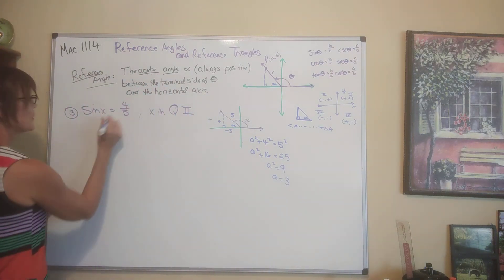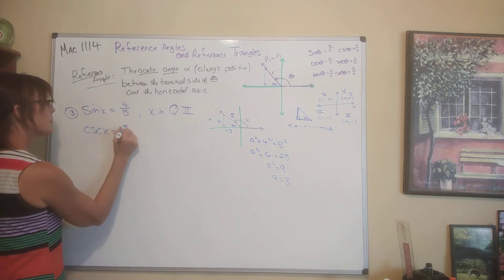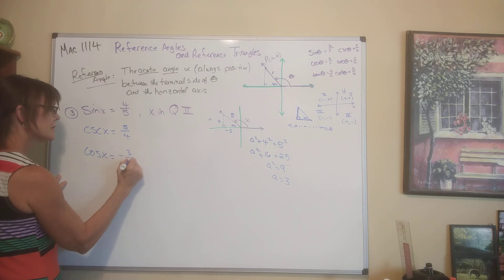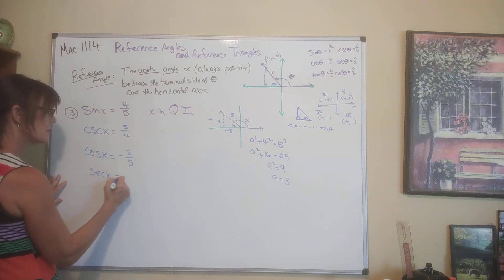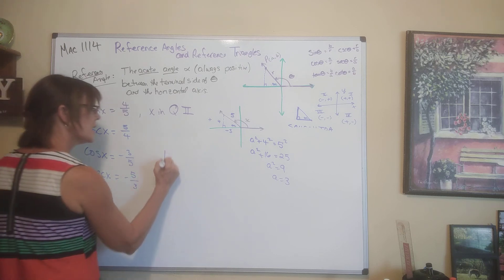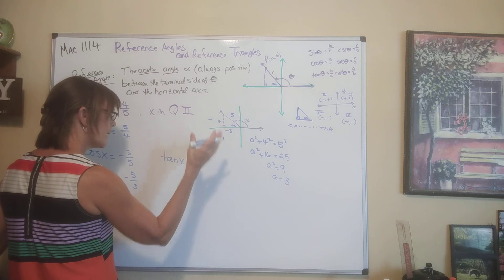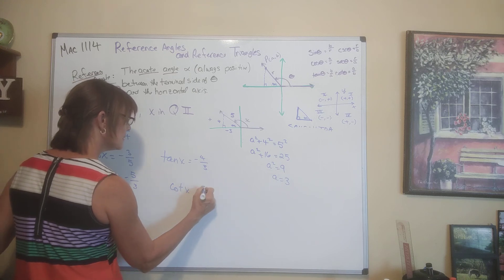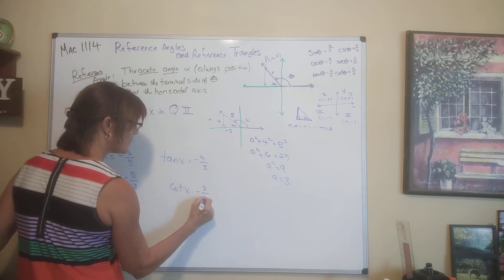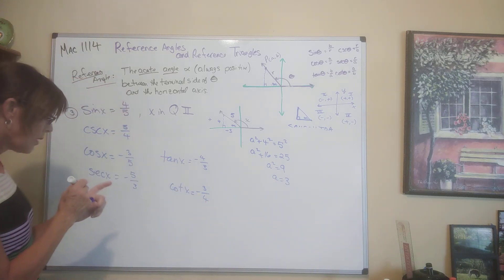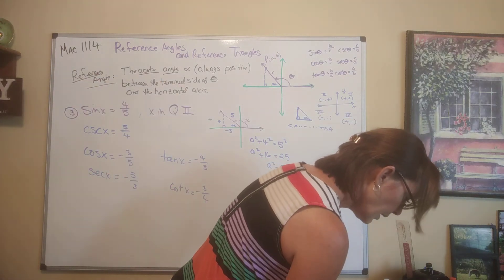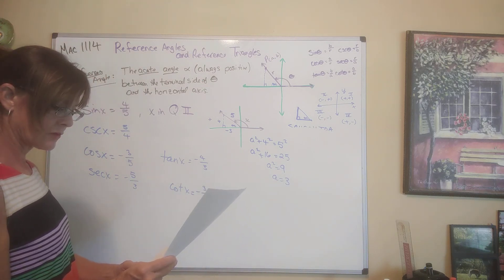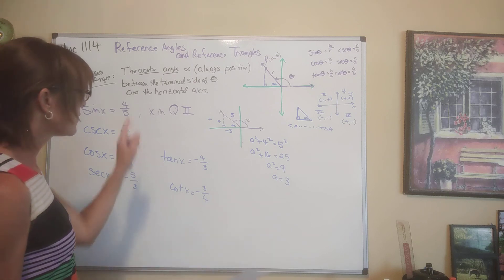Once we have that, we find the rest quickly. Sine is 4 over 5, so cosecant is its reciprocal: 5 over 4. Cosine is adjacent over hypotenuse: negative 3 fifths. Secant is its reciprocal: negative 5 thirds. Tangent is opposite over adjacent: negative 4 thirds. Cotangent is the reciprocal of tangent: negative 3 fourths.